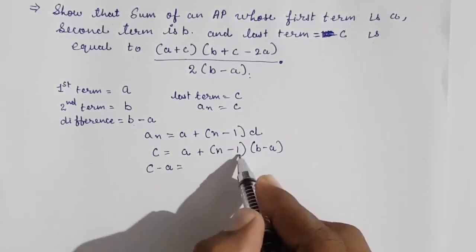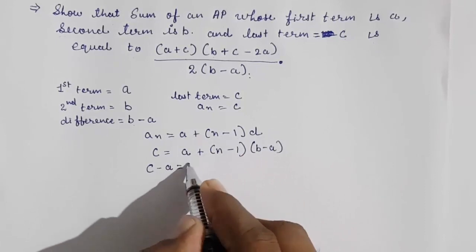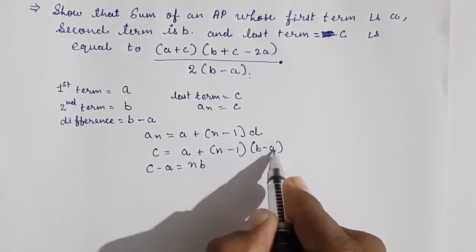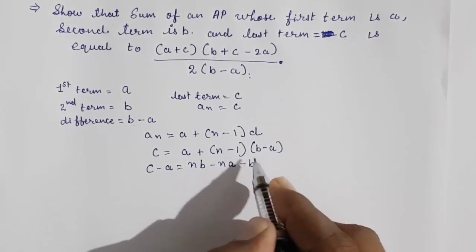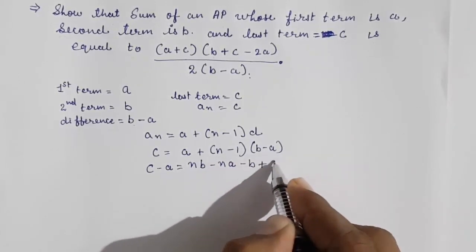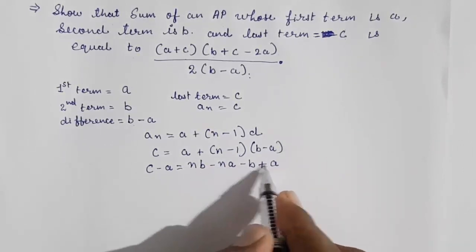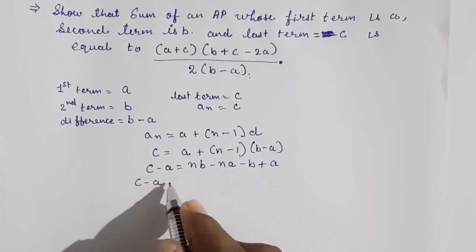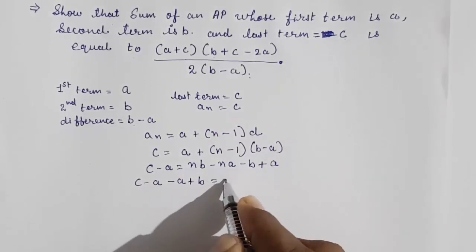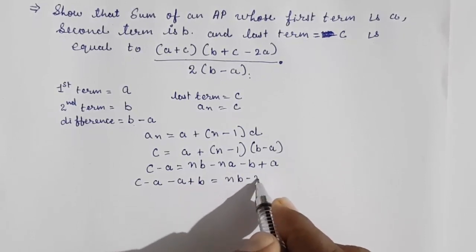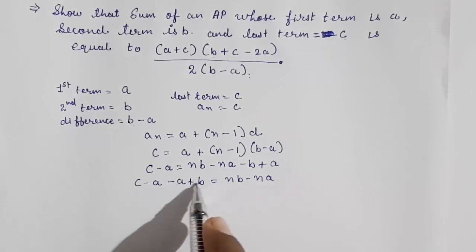Now we are going to solve this. Taking a to the left side gives c minus a. Now expanding the binomial: n into b gives nb, n into minus a gives minus na, and minus 1 into (b minus a) gives minus b plus a. So we get c minus a equals nb minus na minus b plus a.